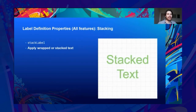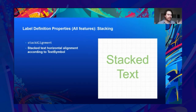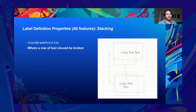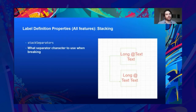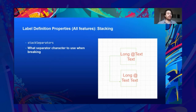Stacking properties: stack label is an on/off flag to enable or disable stacking on labels, affecting all other stacking properties. Stack alignment: you can push the stacking alignment to the left, center, or right — but dynamic allows it to change alignment depending on position relative to the feature. Stack break position: at what part should a row break happen — before the word, at the end, or halfway through. Stack row length: the maximum length of the row before you want to break it. Stack separators: the character to use when breaking the row — the default separator is a whitespace.